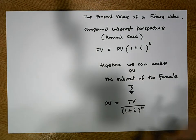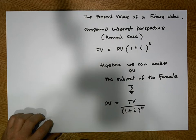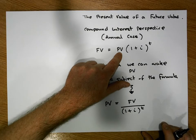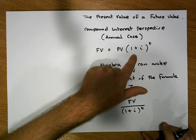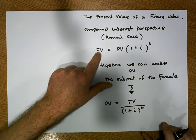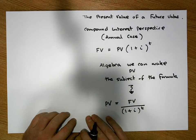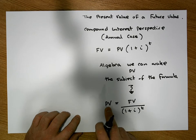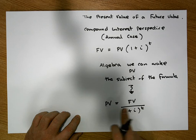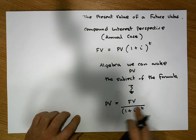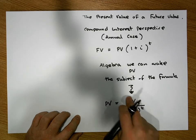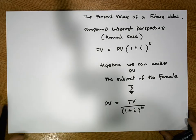This is the reverse of our compound interest perspective. Typically we ask how much you have today and want to know how much it will be worth in the future. This is the reverse: we know how much we're going to have in the future and we're asking how much it's worth today. This term — dividing by (1 + i)^t — is a discounting factor that brings the future value back into today's terms.